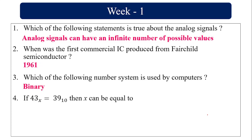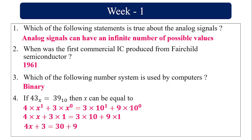If 43 base X equals 39 base 10, then X can be equal to? Each digit in base X is denoted as the digit times base to the power of its position. So 43 can be represented as 3×X⁰ + 4×X¹, which equals 3×10⁰ + 9×10⁰. So 4X + 3 = 39, giving 4X = 36, and X equals 9. The base X value is 9.